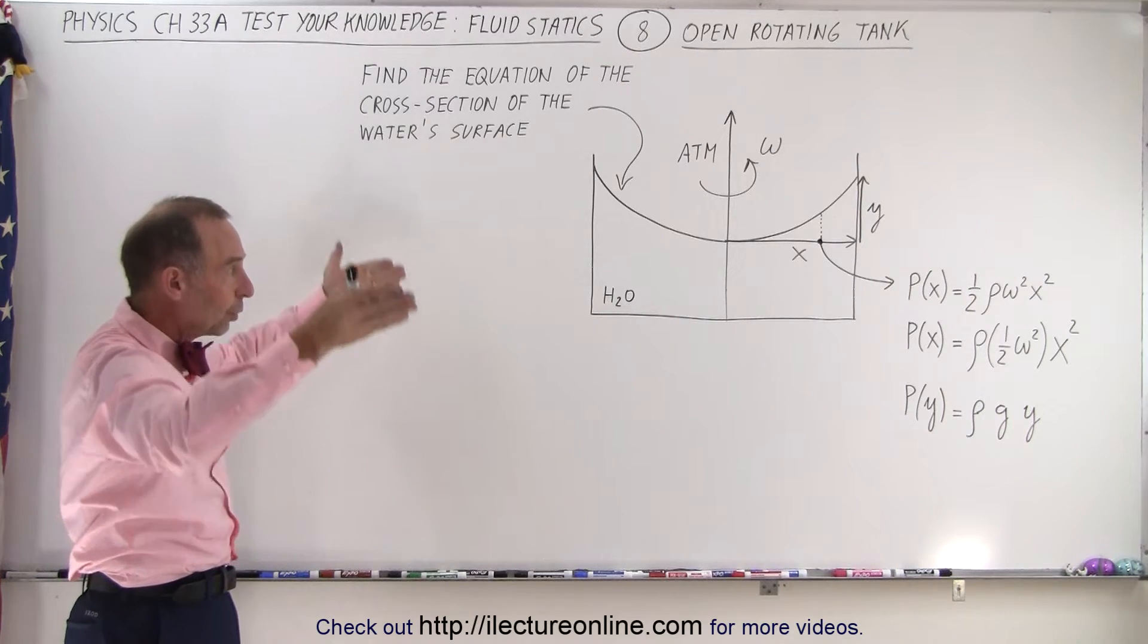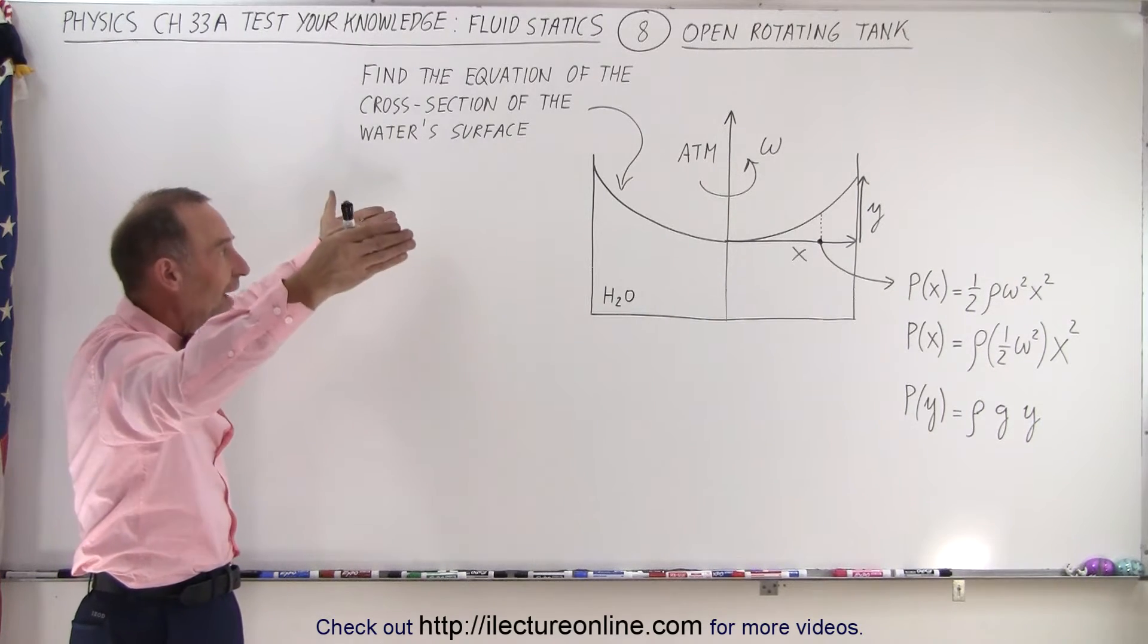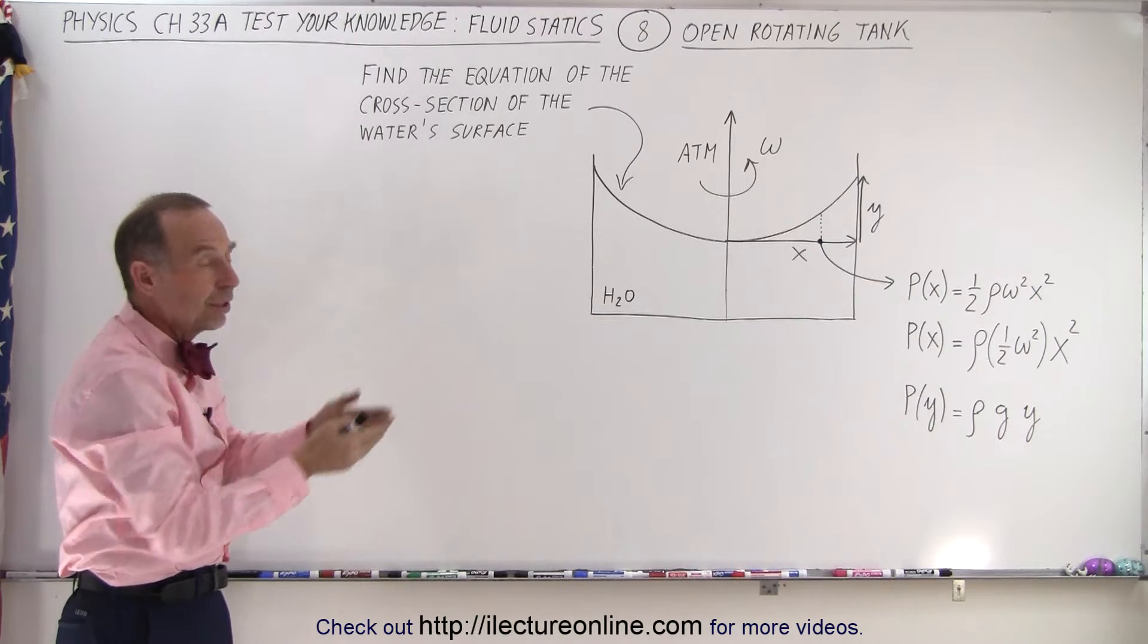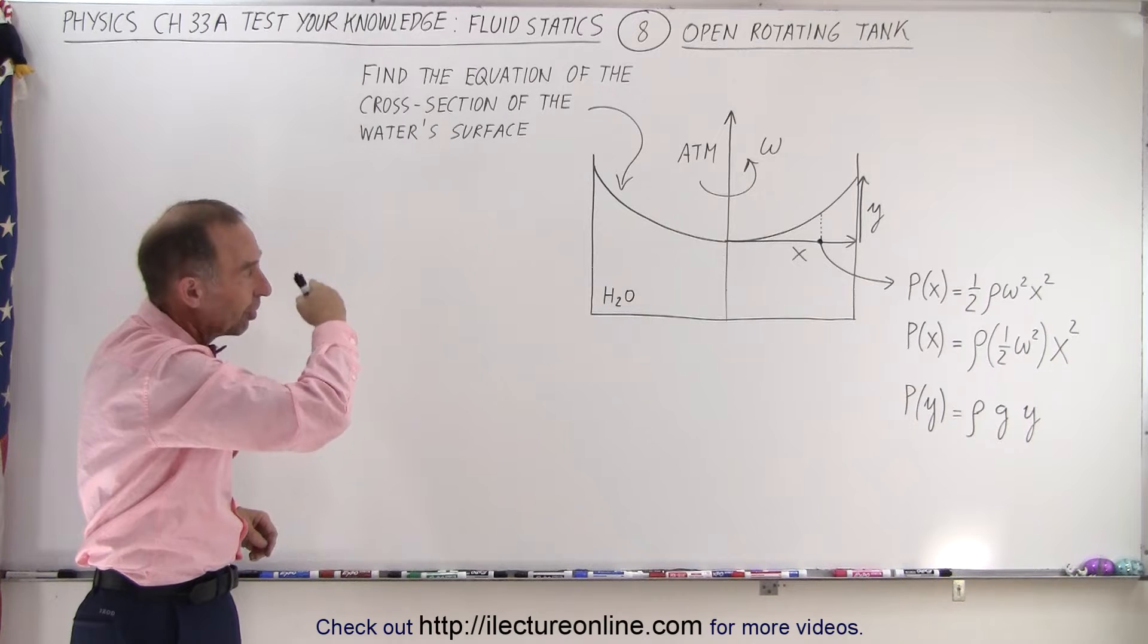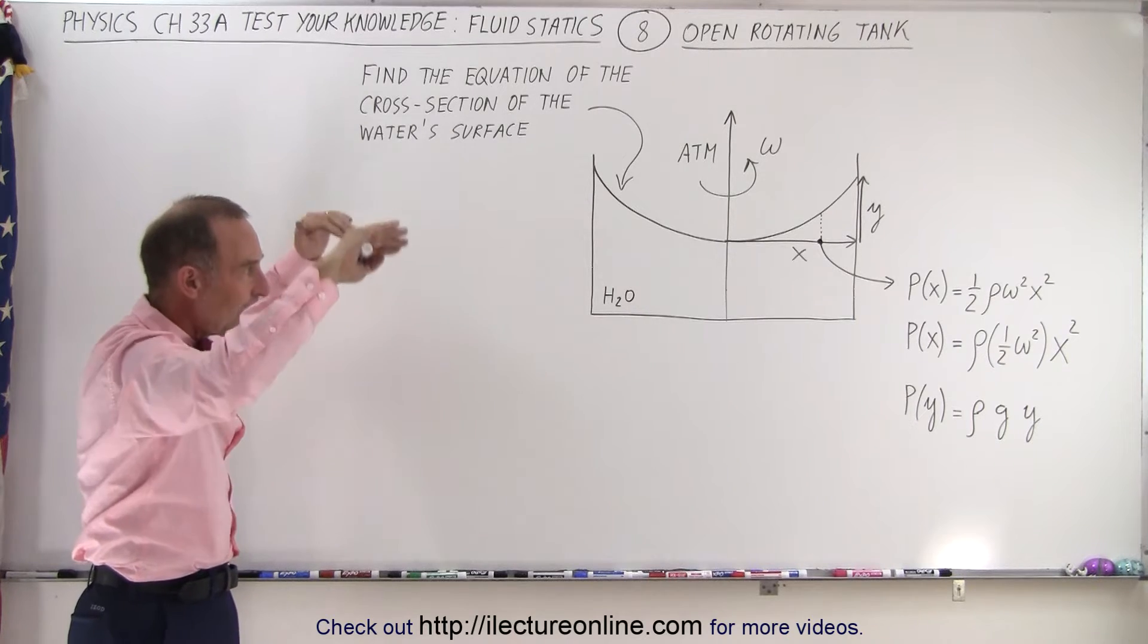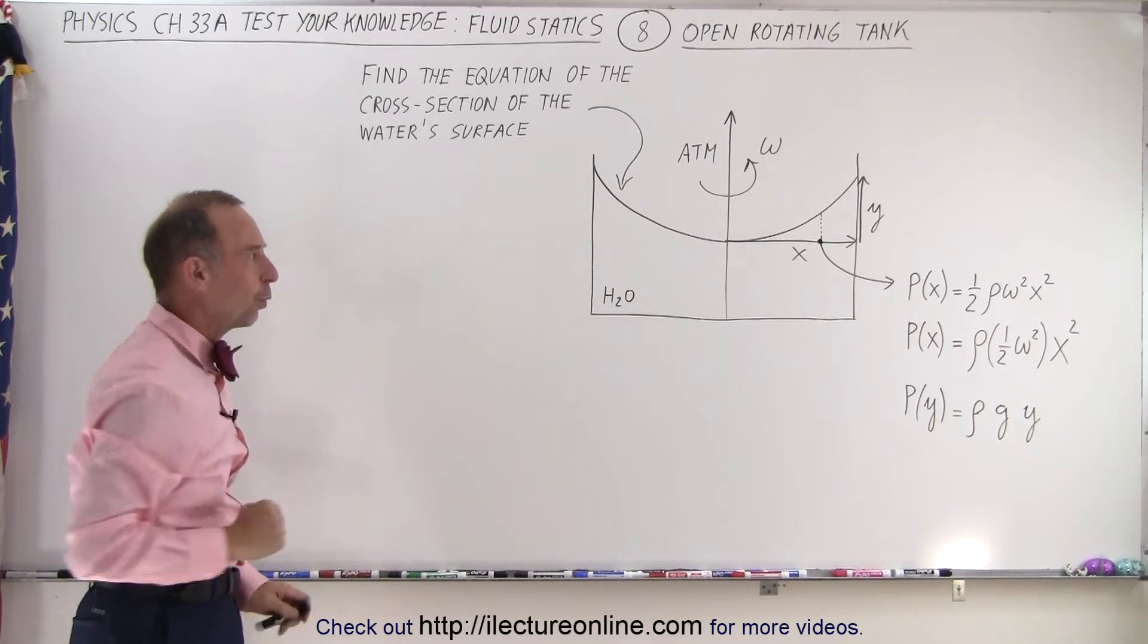What will happen is that the water will bulge up to the sides like that, will be higher at the sides than at the middle. The question is, what is the shape of the cross-section of that, of the top, or the surface of the water?